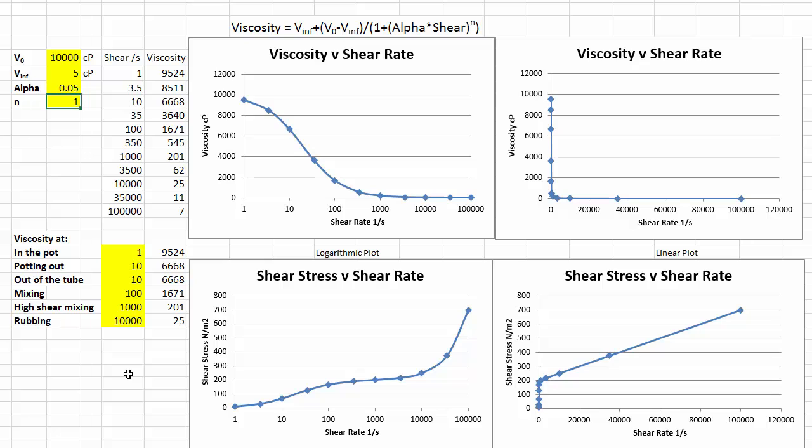The final part of the spreadsheet allows you to estimate the viscosity at different steps. For example if you've got it in the pot slowly stirring it might be at one hertz and therefore its viscosity will be 9,500 centipoise. If it's mixing at 100 hertz it might be 1,600 centipoise. High shear mixing it might be down to 200. But when you just rub the adhesive or when you stick things together and slide them with a 10 micron gap the shear rate is probably something like 10,000 so the viscosity is only 25 centipoise. So it's very important not only to see these curves but apply them.